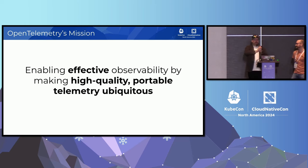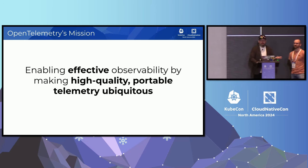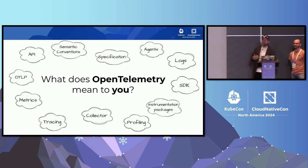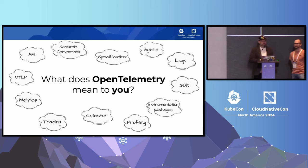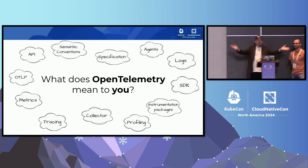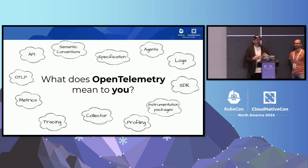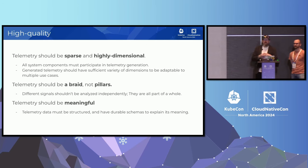Which is interesting, because on the website it says our mission is to enable effective observability by making high quality, portable telemetry ubiquitous. But what does that actually mean in practice? There are a lot of different things that go into OpenTelemetry: the API, semantic conventions, profiling, instrumentation packages, tracing, metrics, logs, OTLP, agents. There are so many things it's hard to really say what OpenTelemetry is and how it fits together. So what we want to do is narrow in on what does it mean to have high quality instrumentation anyway?